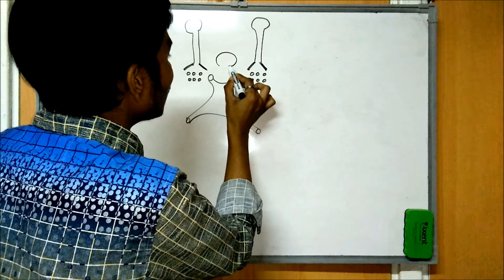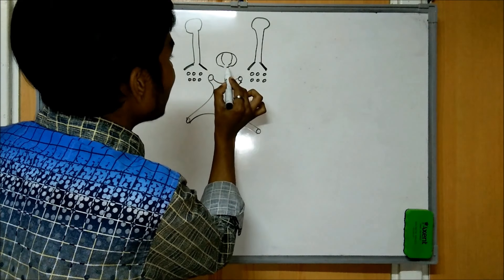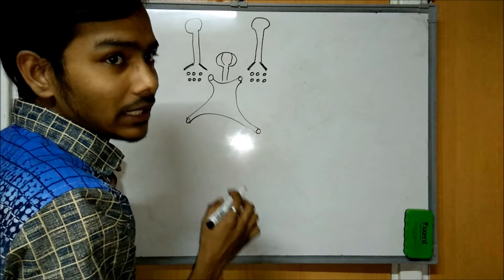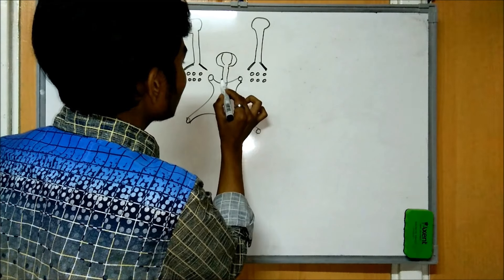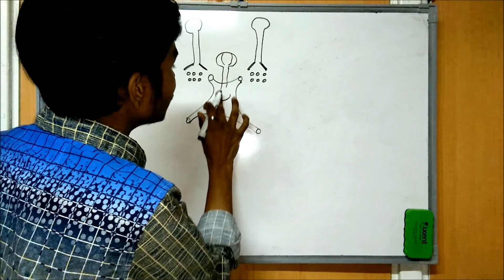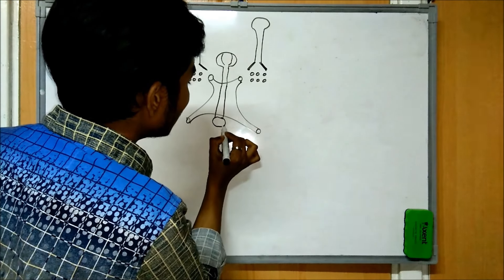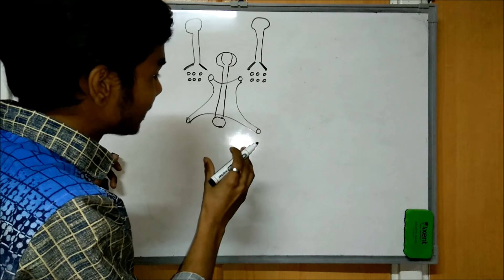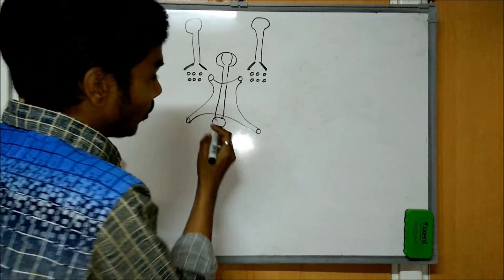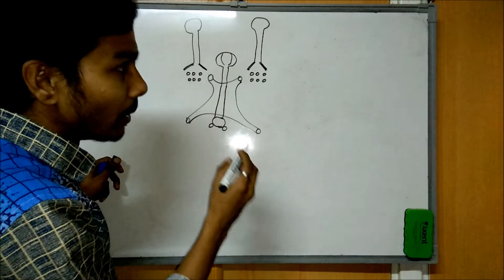Above the optic chiasma, we have a structure called the pituitary body. The pituitary body connects via a stalk-like structure called the pituitary infundibulum. This stalk ends with a bulb-like structure called the tuber cinereum. This process also has a smaller process on the lateral side, which is called the mammillary body.